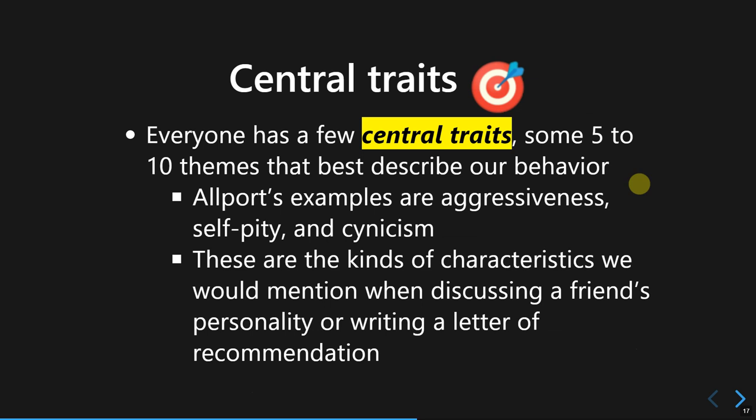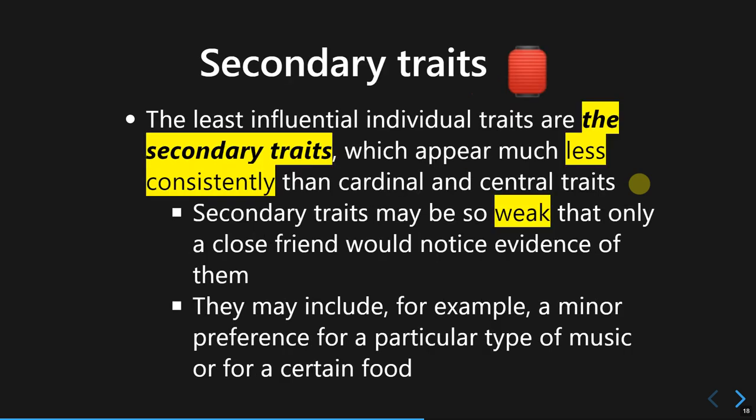The second type is central traits, which are the most apparent and vivid characteristics of a person's personality. Central traits consist of five to ten themes that describe the general pattern of our behavior — things like aggressiveness, self-pity, or cynicism. These are the characteristics that often appear when a friend writes you a letter of recommendation, giving a testimony about how they would best describe you as a person.